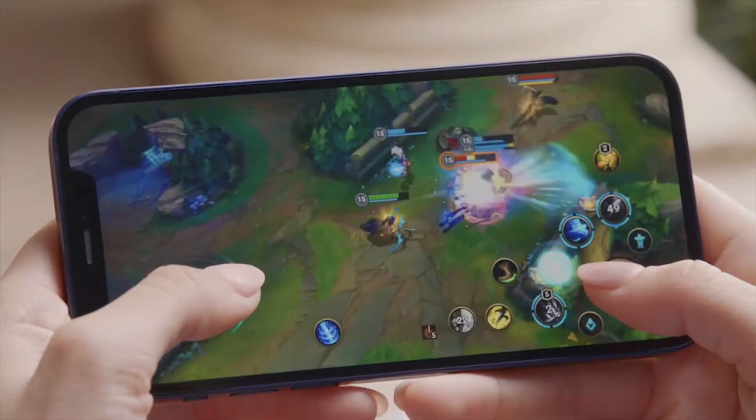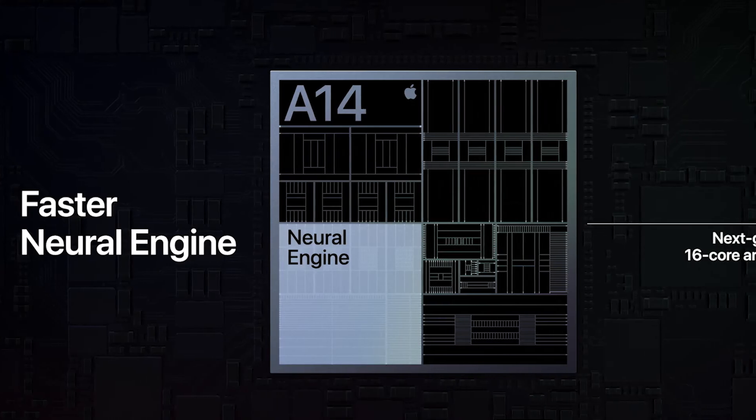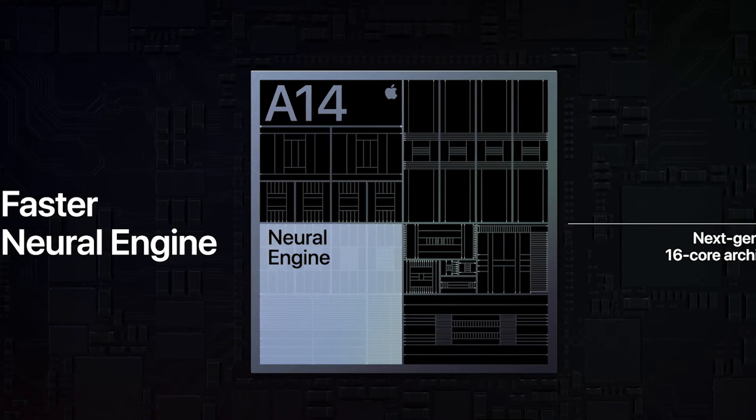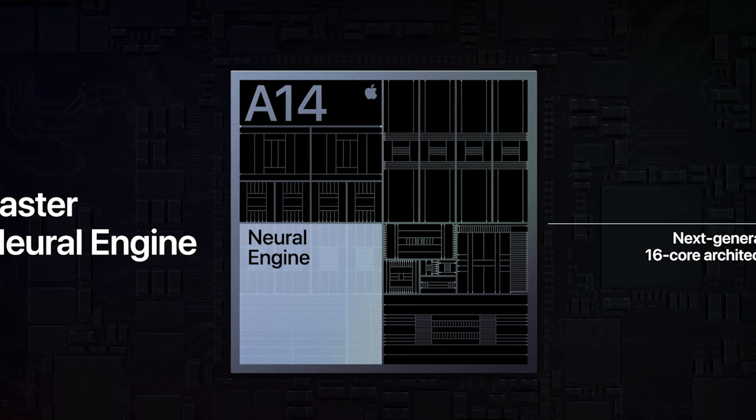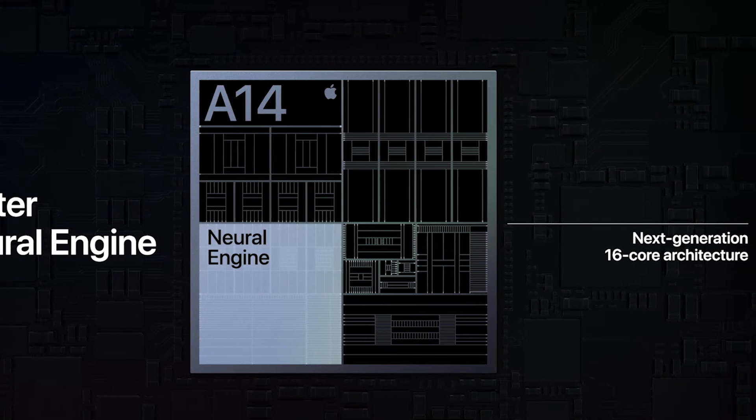There are a lot of PC games being released on the iPhone, like League of Legends. These games are launching on the iPhone 12. There is also a neural engine in the iPhone 12 with 16 cores, providing very fast neural performance.